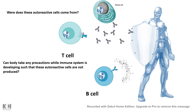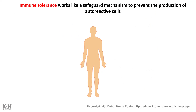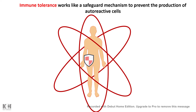Two questions are crucial to understand: first, where do these autoreactive immune cells come from, and second, is there any safeguard mechanism present in our body which can prevent the production of these autoreactive cells? It turns out there is a mechanism called immune tolerance, which works like a safeguard mechanism to prevent the production of autoreactive cells, thus protecting our body from their harmful effects. In this video, we'll talk about immune tolerance.